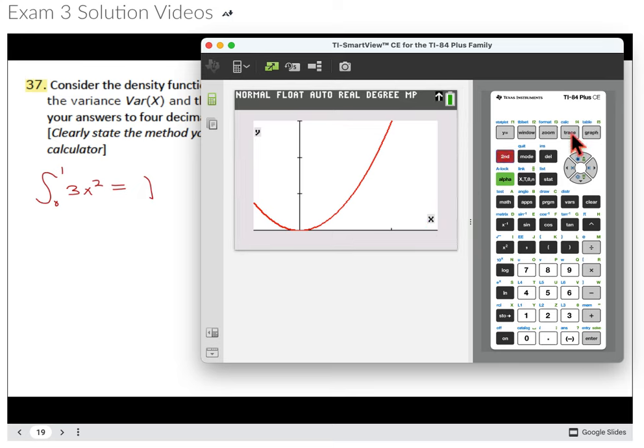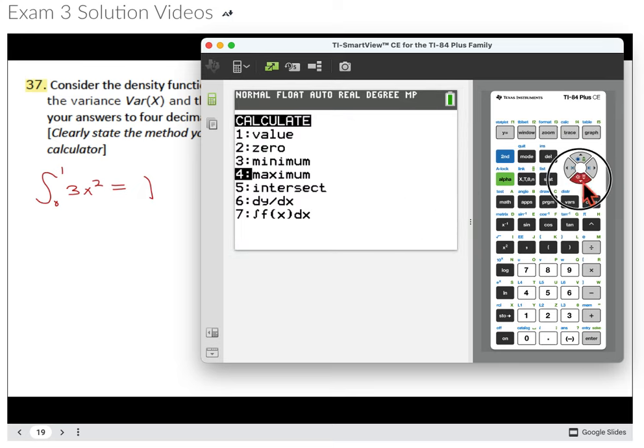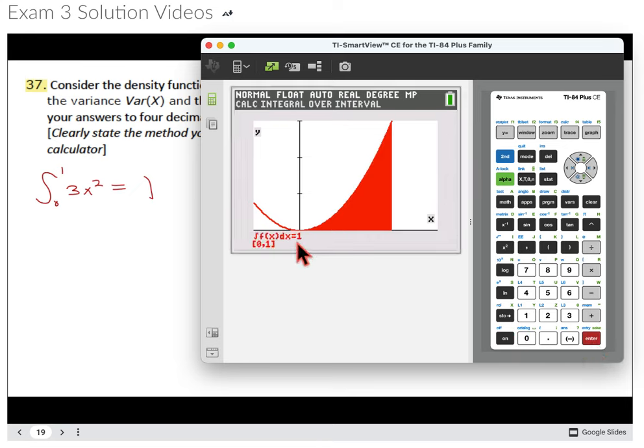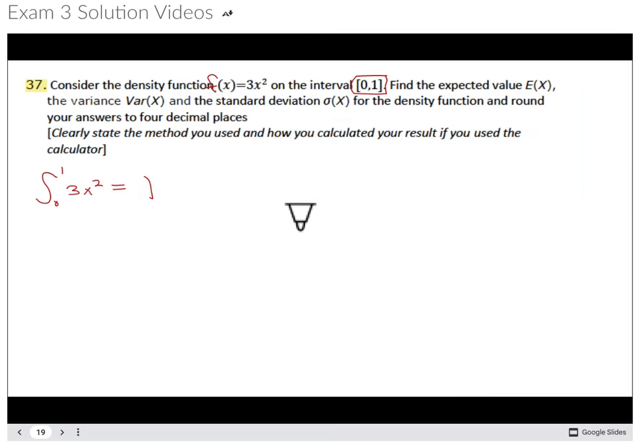And then what I want to do is I go 2nd calc. I'm just verifying that this is a density function. So the lower limit is 0. The upper limit is 1. And this needs to be equal to 1, which it is. And it shows us, okay, so it's this area equal to 1. So we've got a density function.